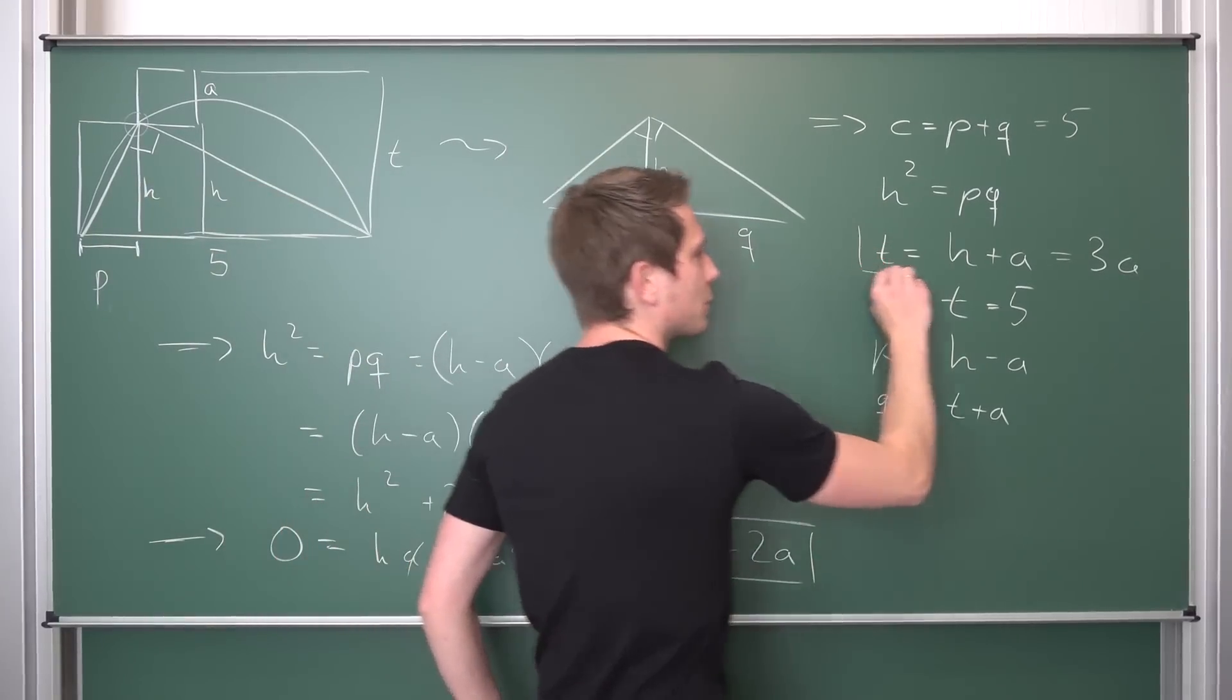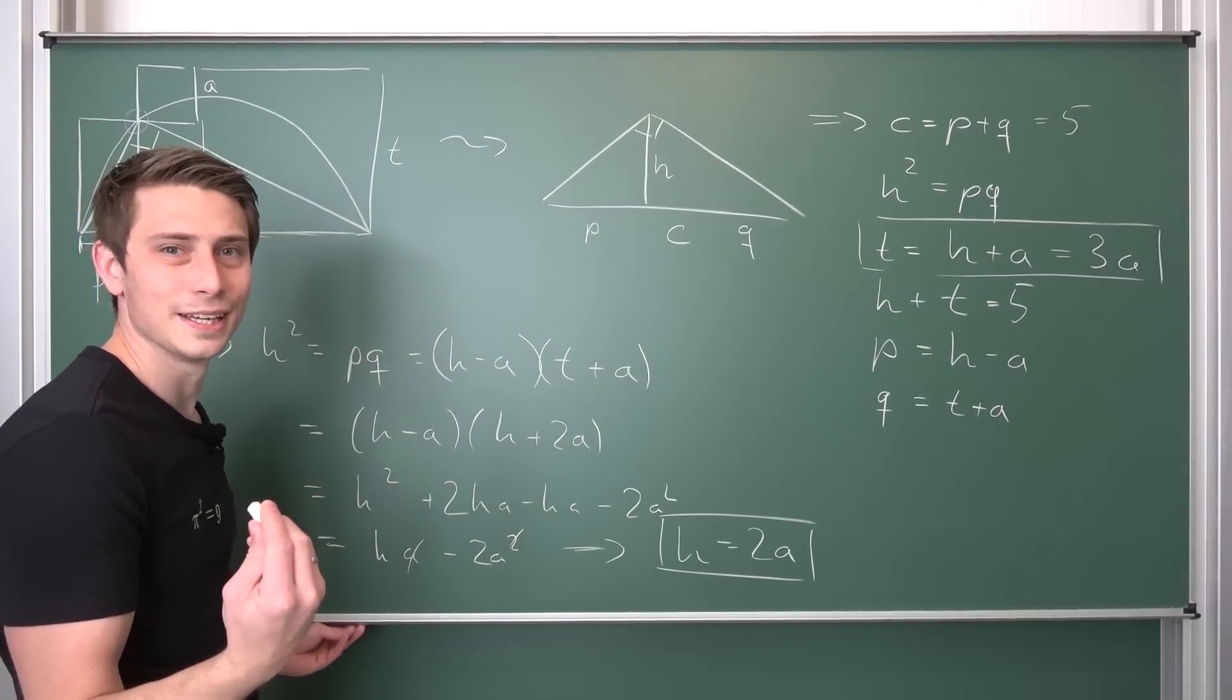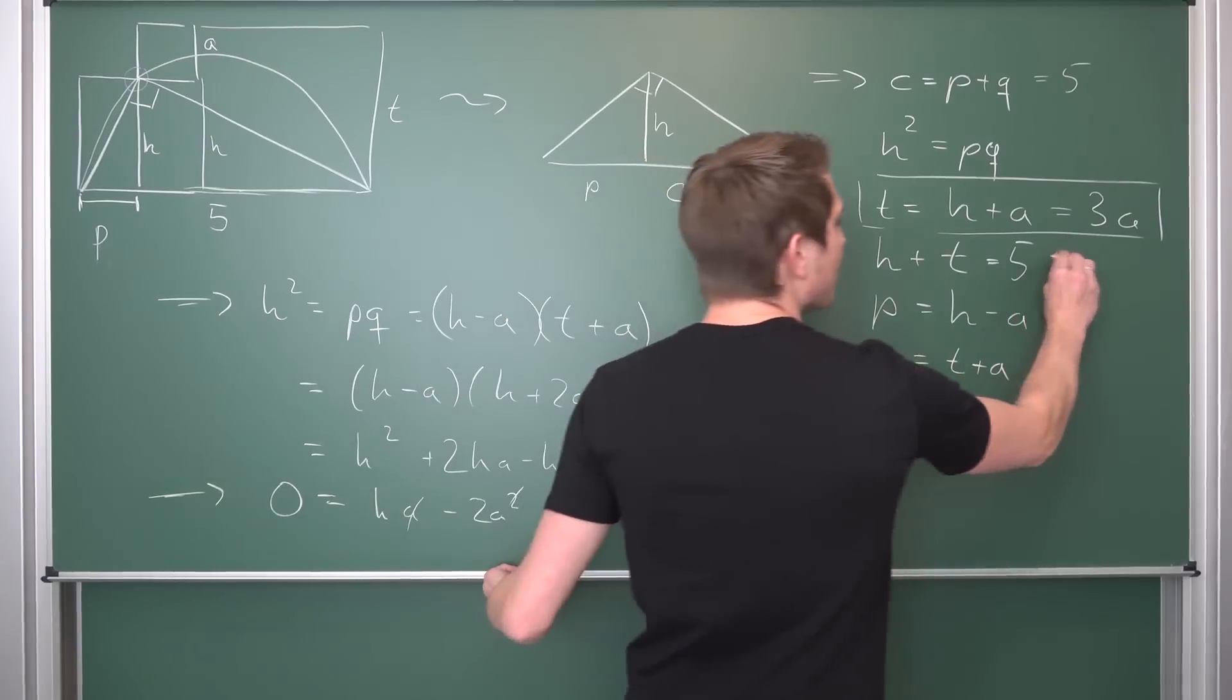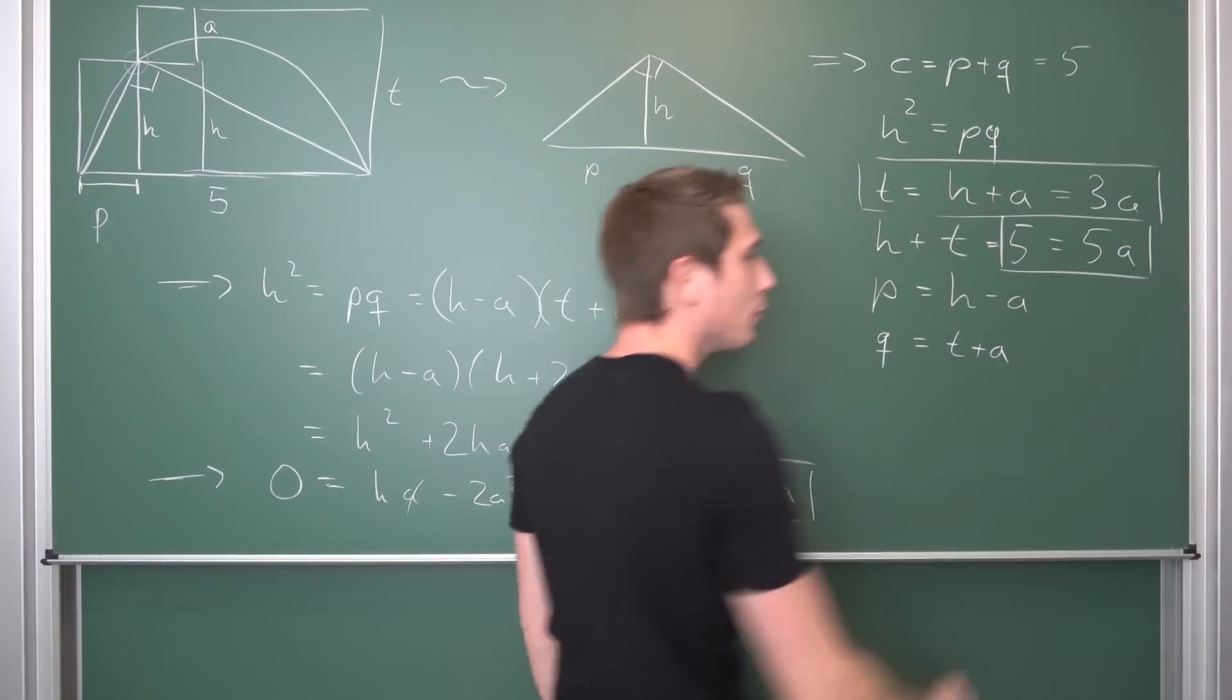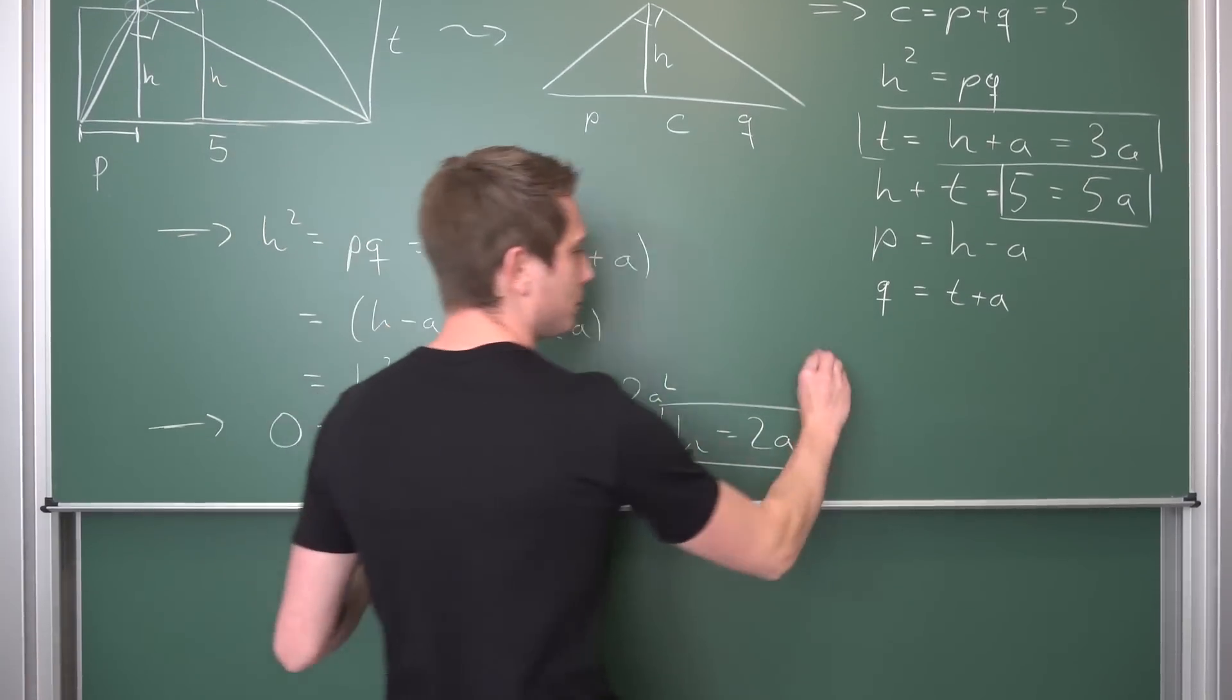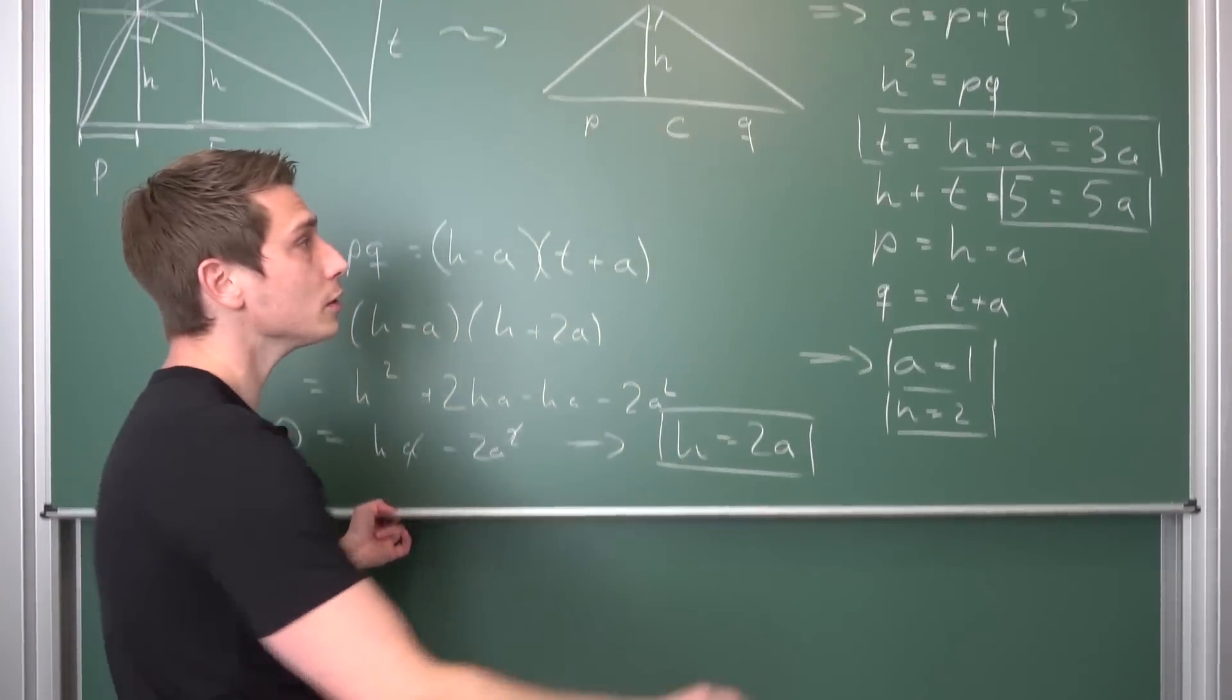Now we have an expression for T and H. All that's left is to find an explicit value for a. We have H plus T equals 5. We plug everything in: T is 3a, H is 2a, makes 5a. So 5 equals 5a. Dividing both sides by 5, we get a equals 1. Meaning overall H equals 2, and T equals 3.